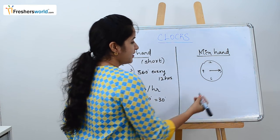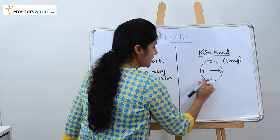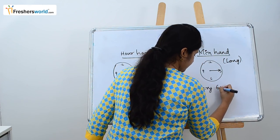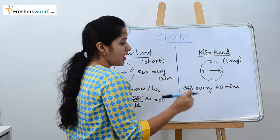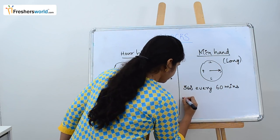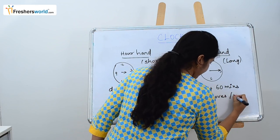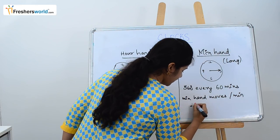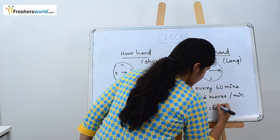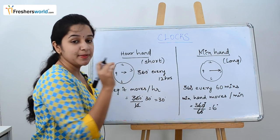Now let's go to the minute hand. Similarly, we call the minute hand the long hand. It moves 360 degrees every 60 minutes. So, we want to know how much the minute hand moves every minute. It is 360 divided by 60, which is 6 degrees. The minute hand moves 6 degrees every minute.